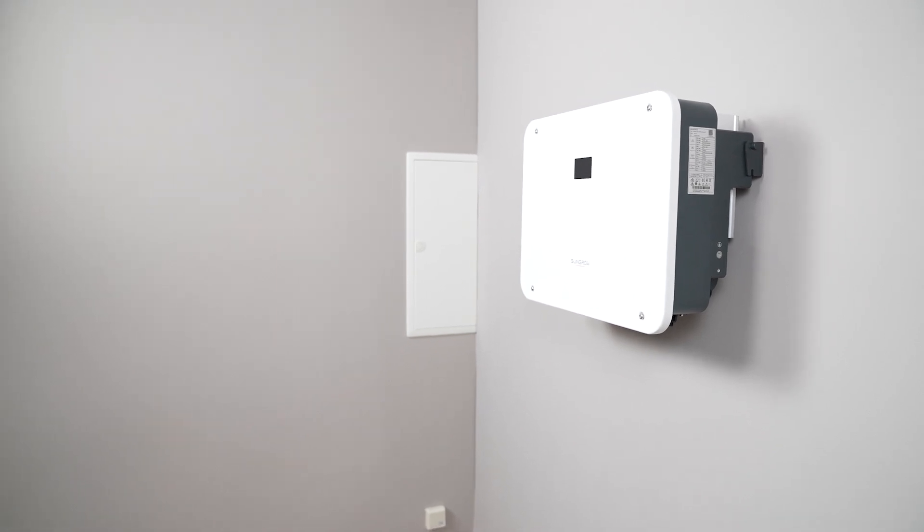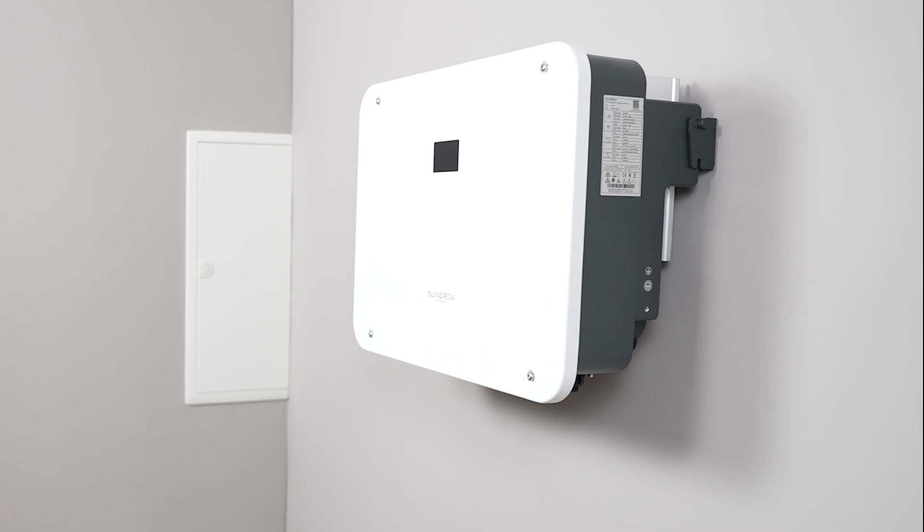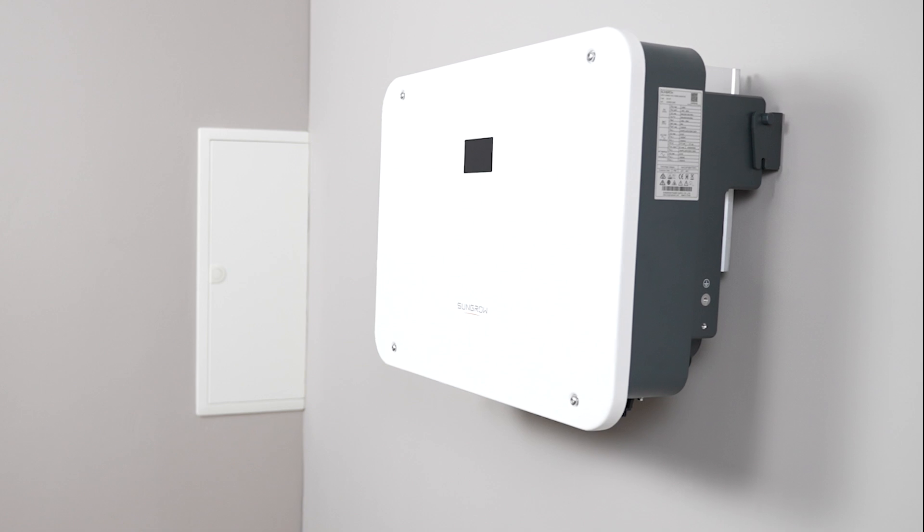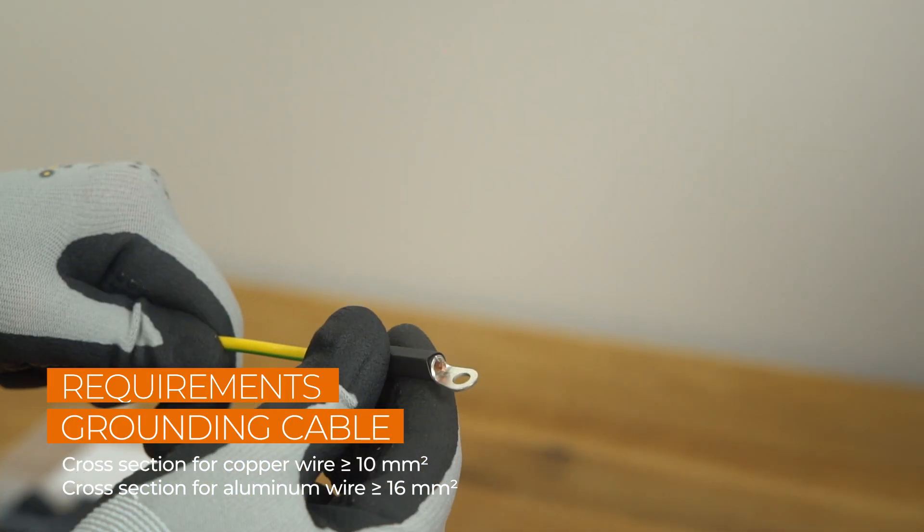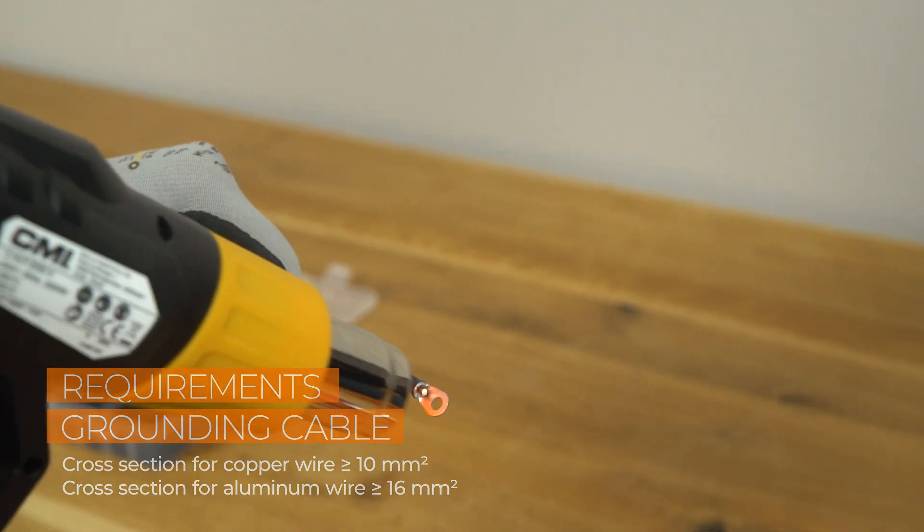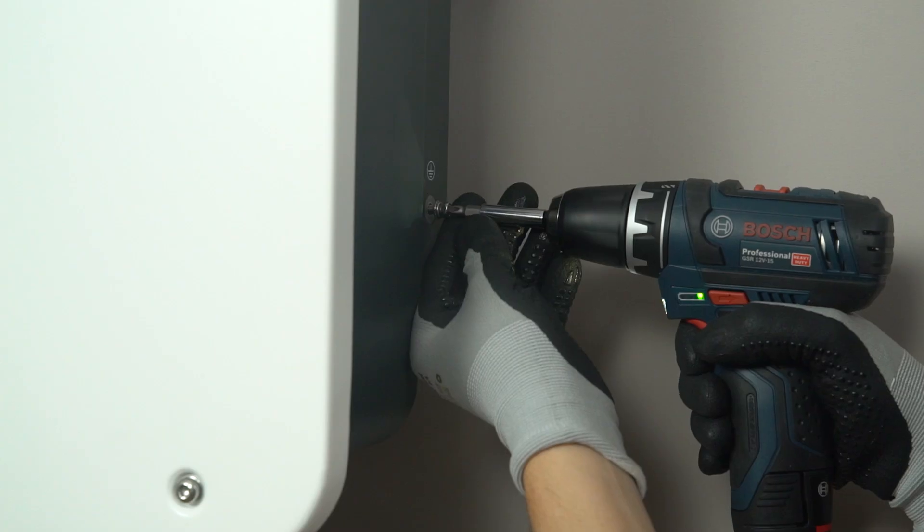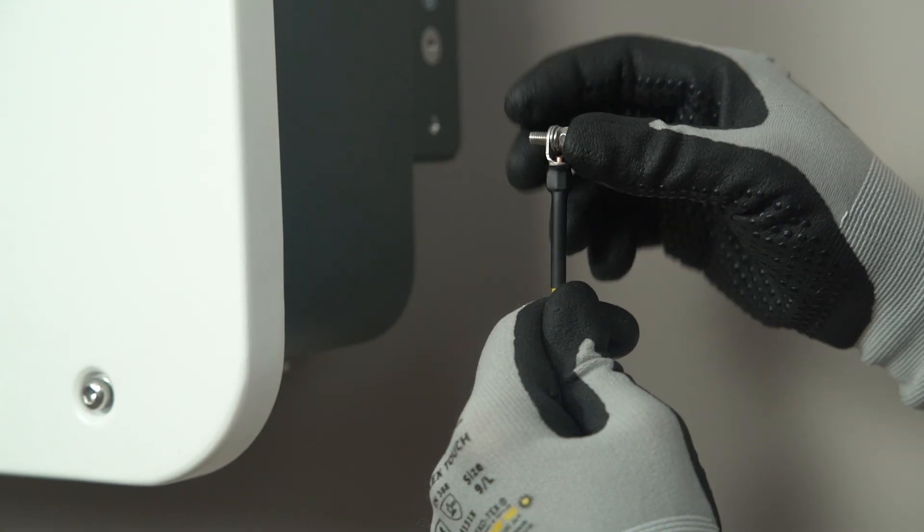There are two PE connections, one on the left side and another one on the right side of the inverter. At least one of them must be connected to the general grounding of the house. Crimp the grounding cable, remove the screw on the grounding terminal and fasten the cable with a screwdriver.